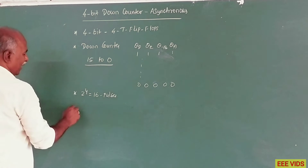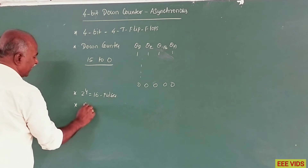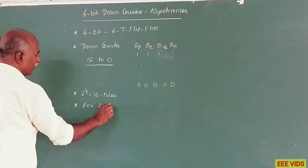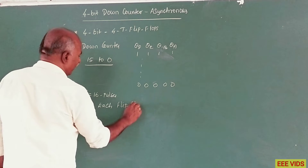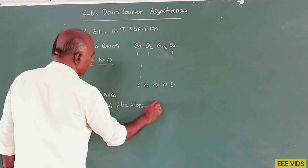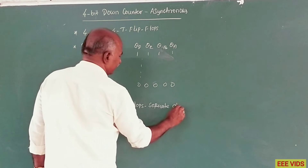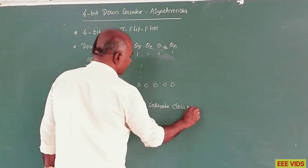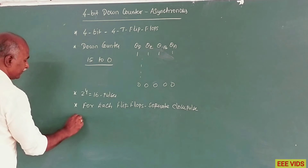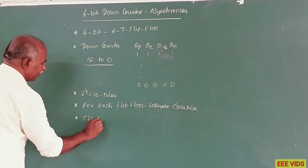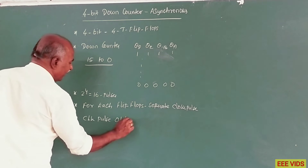This is an asynchronous type counter. For each flip flop, there is a separate clock pulse — the clock pulse for each flip flop is obtained from the output of the previous flip flop.